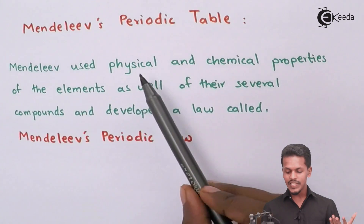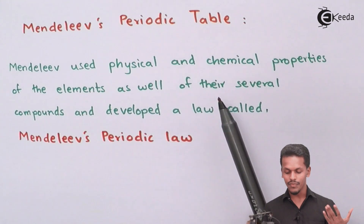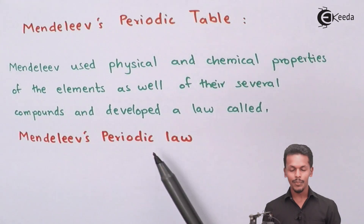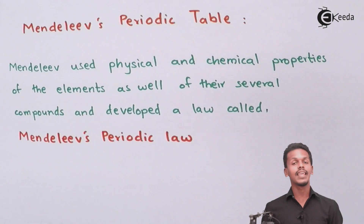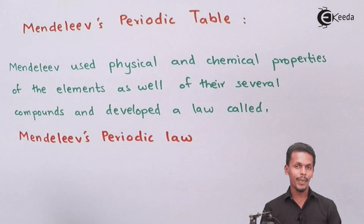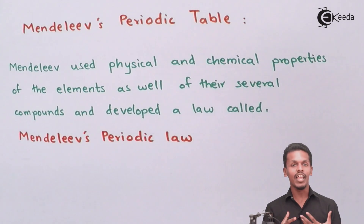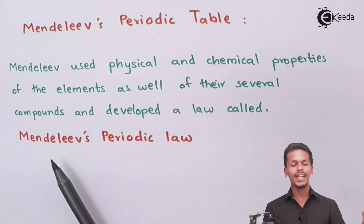Mendeleev used the physical and chemical properties of elements as well as their several compounds, and developed a law known as Mendeleev's periodic law. He arranged the elements in such a way that those with basically similar chemical or physical properties were grouped together.